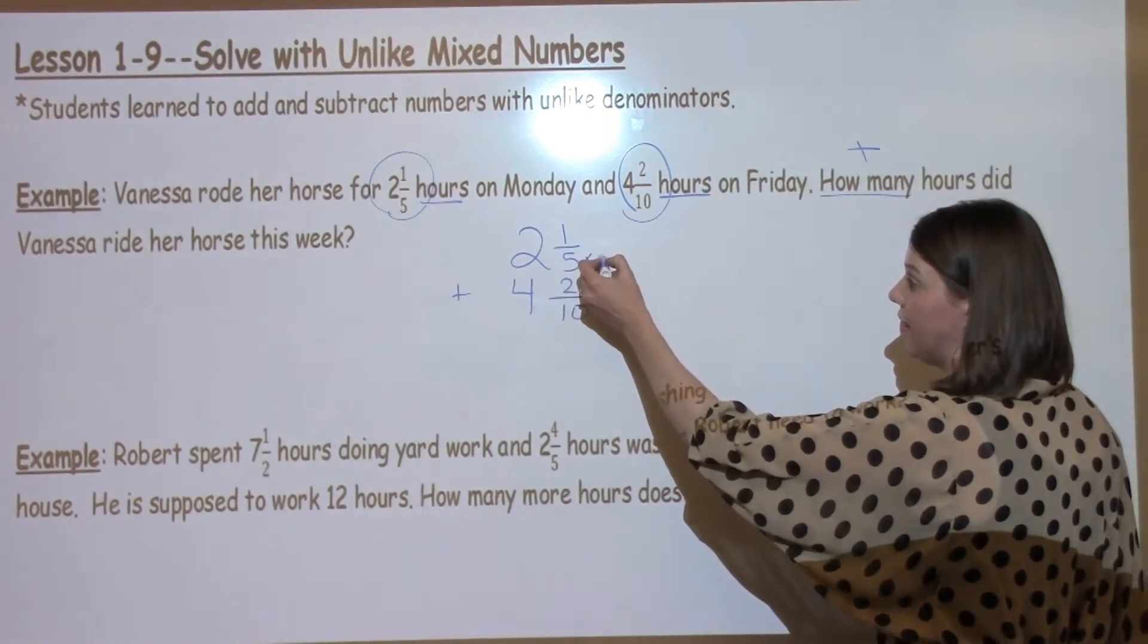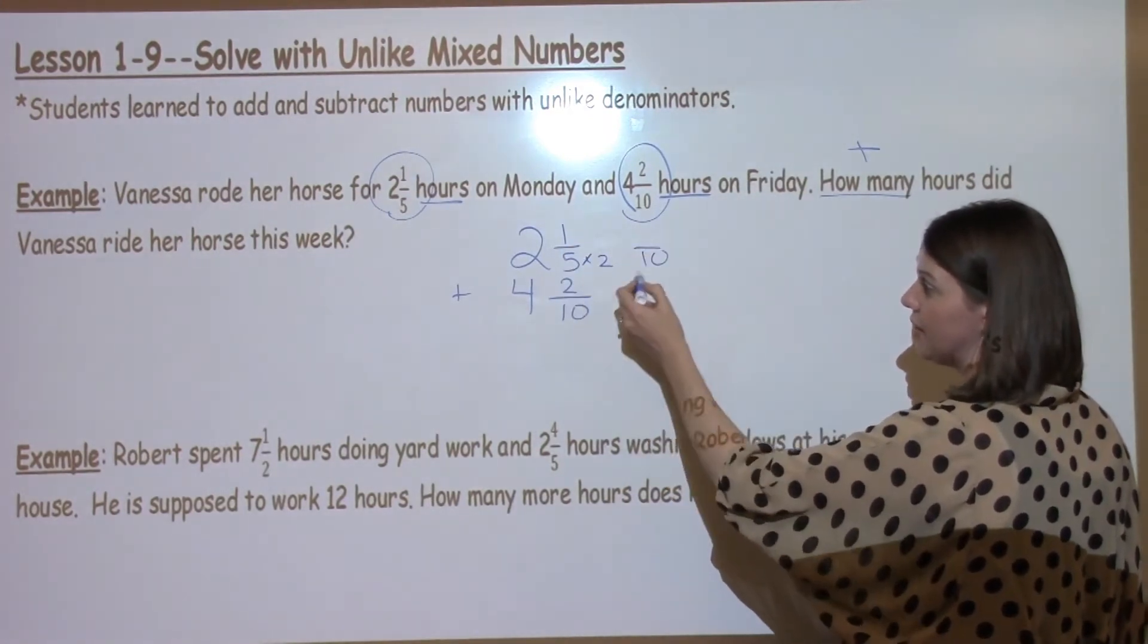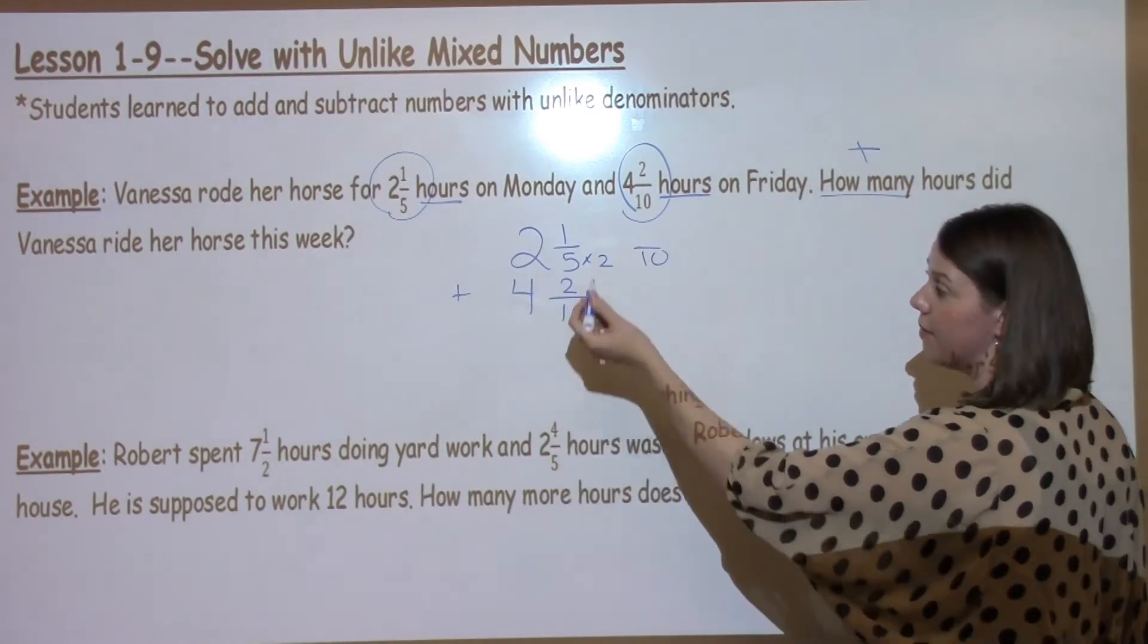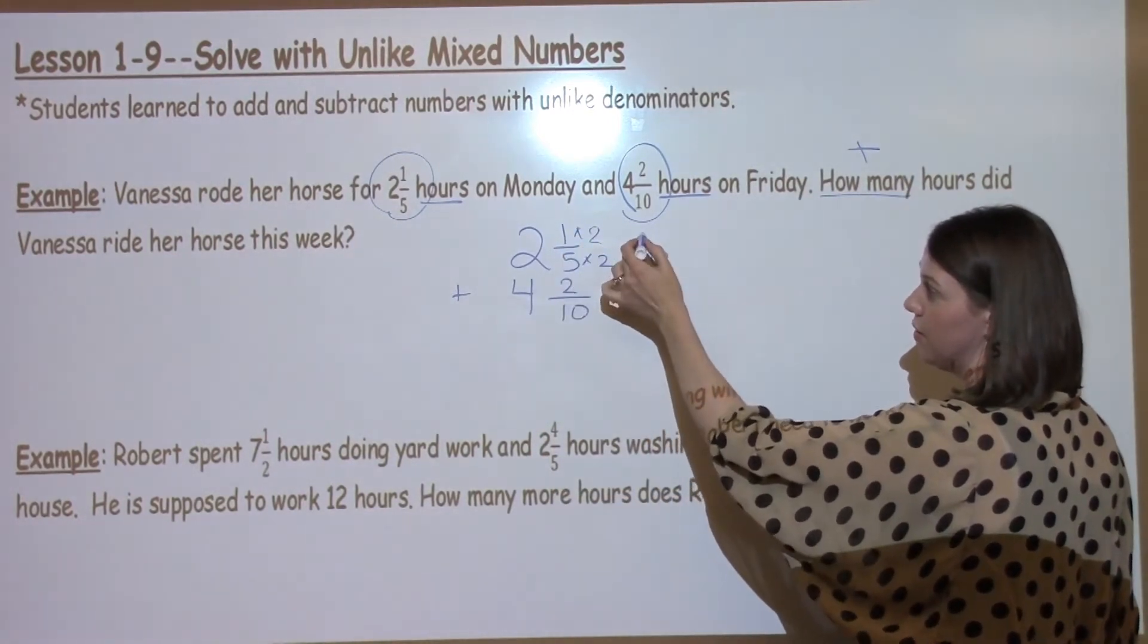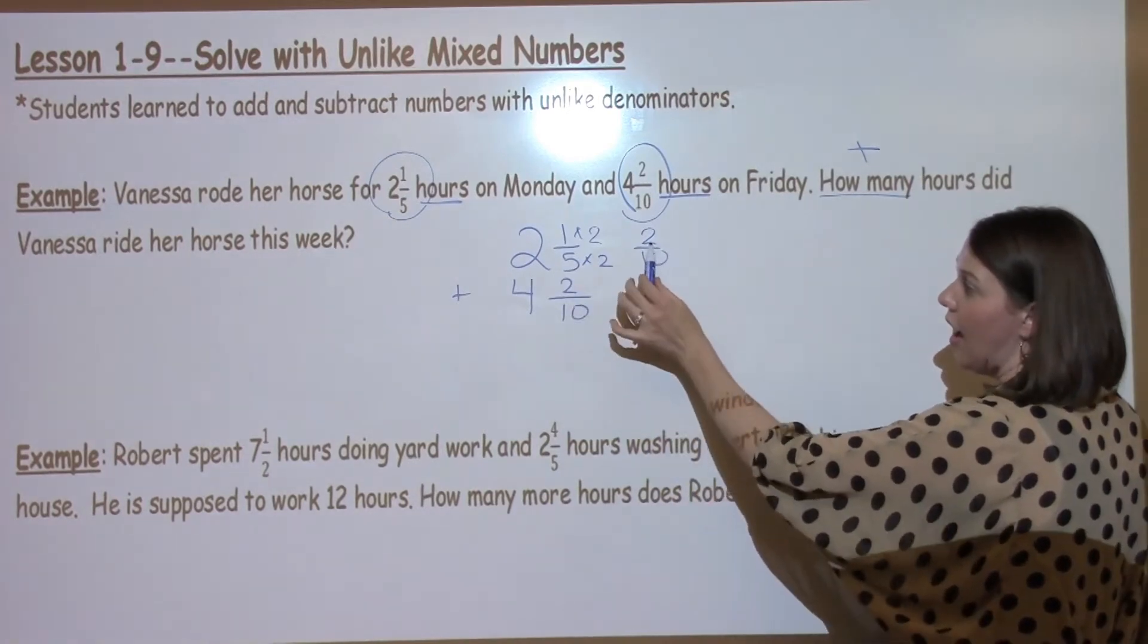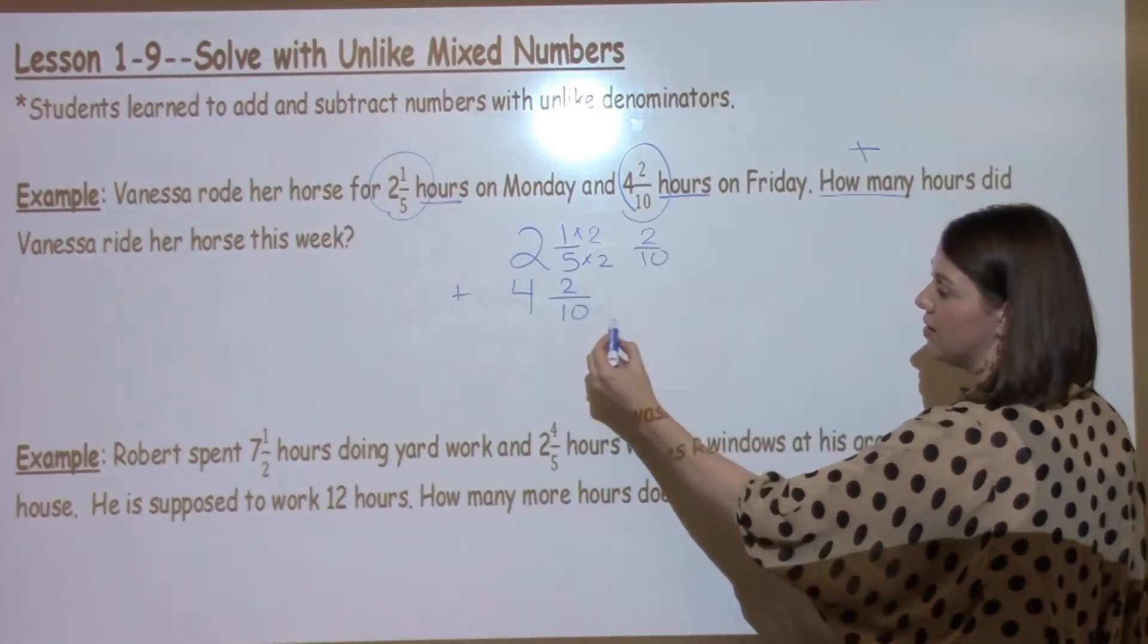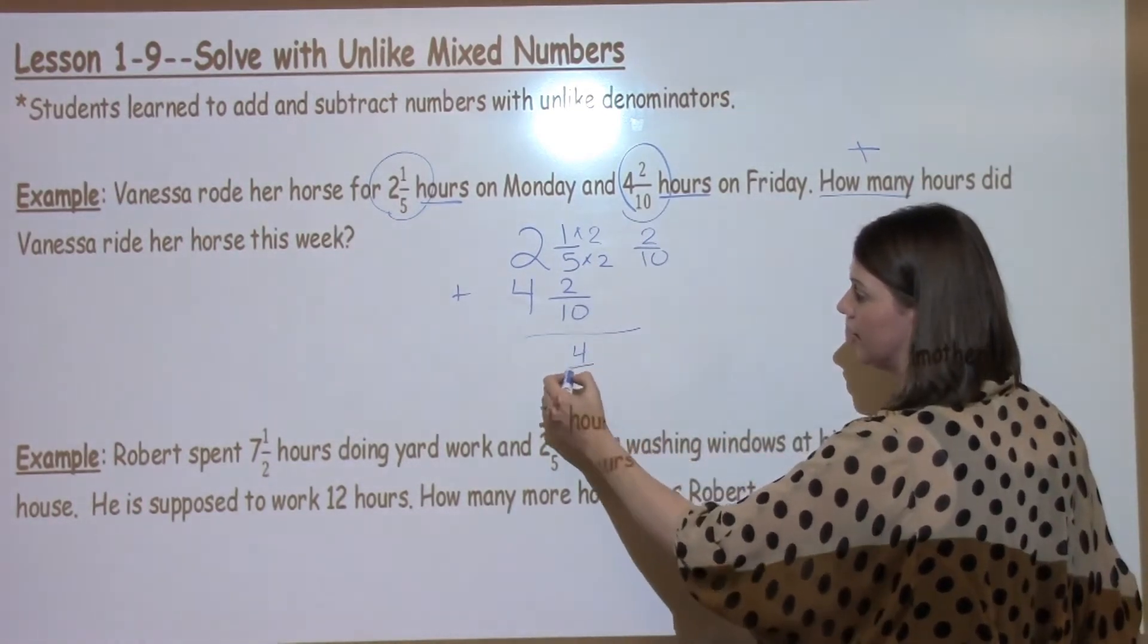So if I take 5 times 2, I get 10. Now we can see both of these denominators are the same. So I can add them. If I do it to the bottom, I have to do it to the top. 1 times 2 is 2. I take 2 10ths plus 2 10ths, which is 4 10ths.